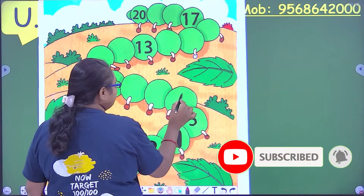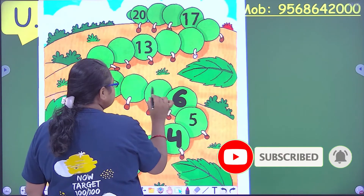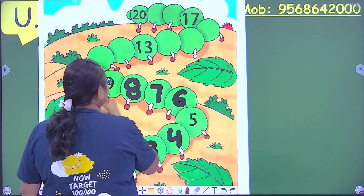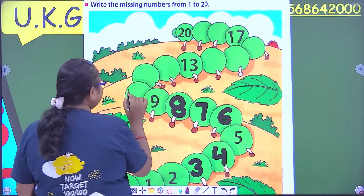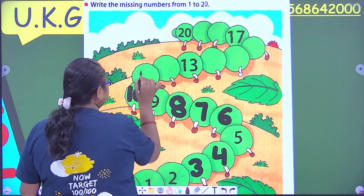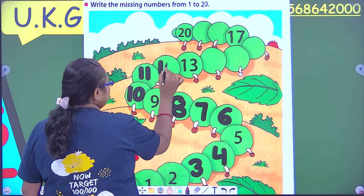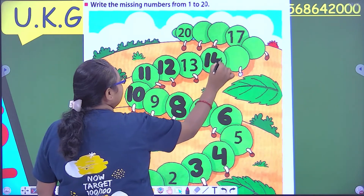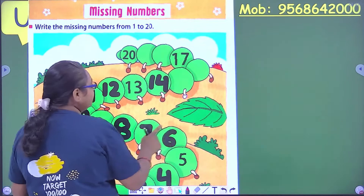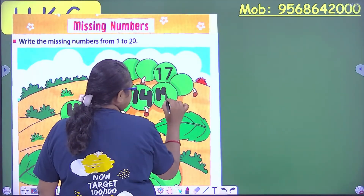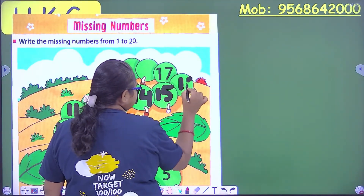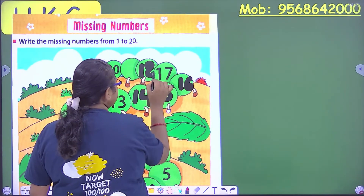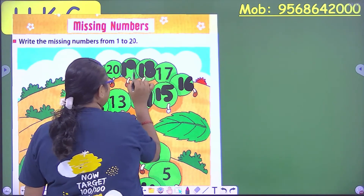What comes after 5? 6, 7, 8. What comes after 9? 10, 11, 12, 13. Then 10, 12, 14. Then 15. Then 11, 13. Then 12, 18. And 19.